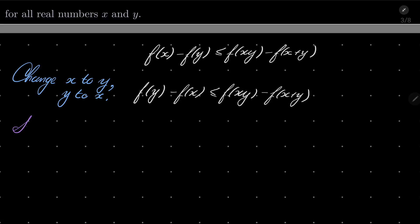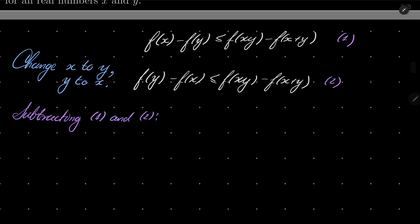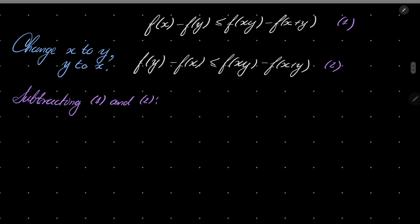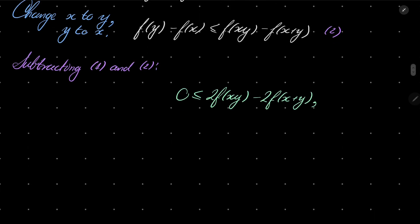So we have these two inequalities. We can subtract them. Subtracting one and two, on the left hand side we have just zero now, and on the right hand side we have 2f(xy) - 2f(x+y). Now we can divide by two and write this in the following way.